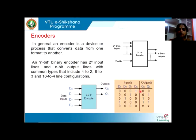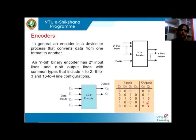Here is an example of how the truth table of an encoder looks like. We have 4 inputs and 2 outputs. When D0 is high, the output is 0, 0. When D1 is high, the output is 0, 1. When D2 is high, the output is 1, 0. When D3 is high, the output is 1, 1. If all inputs are 0s, the outputs are don't-care numbers.